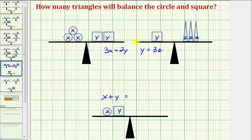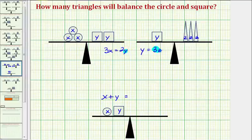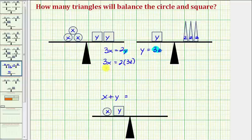Looking at the two given equations, because y equals 3z, we can perform a substitution for y in this equation here, and when we do this, we would get the equation 3x equals 2 times 3z, or 3x equals 6z.